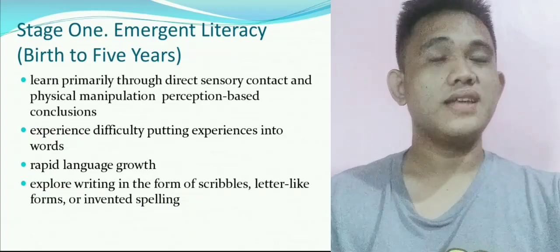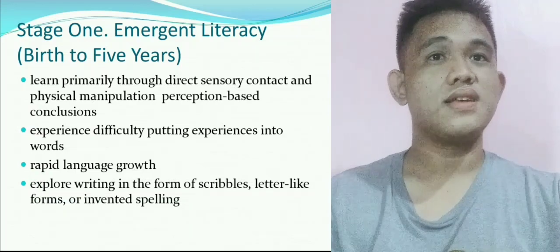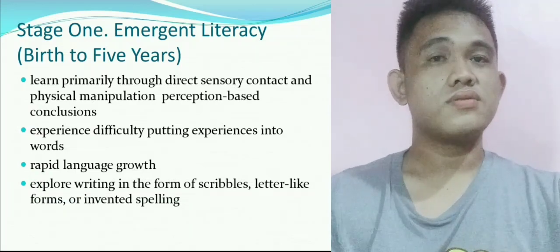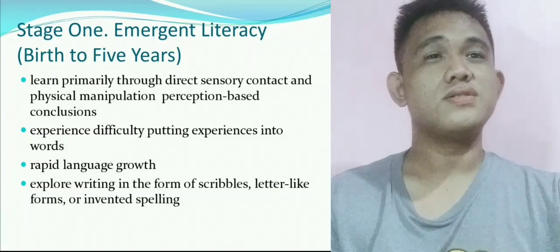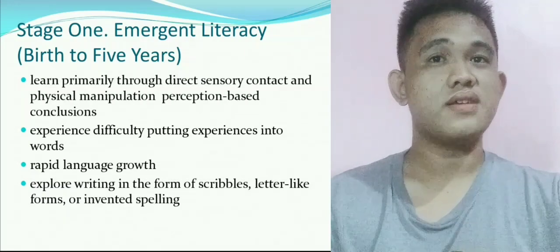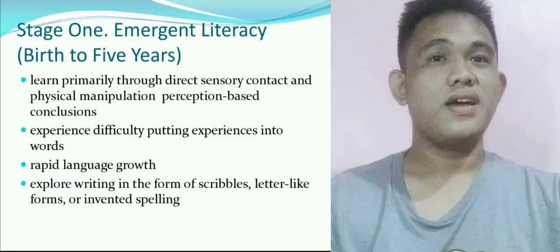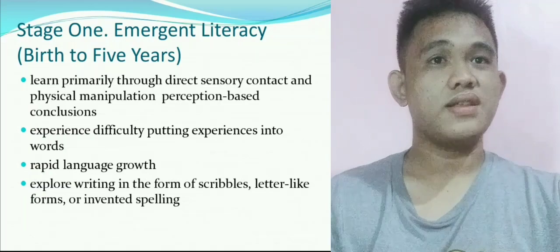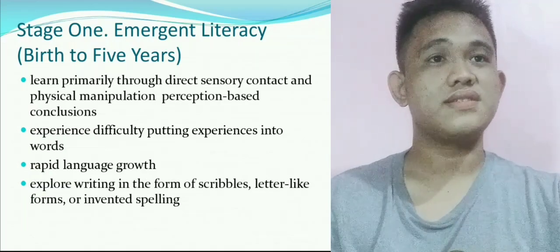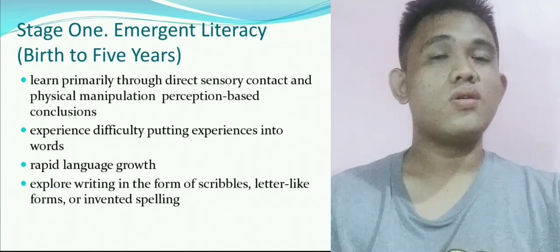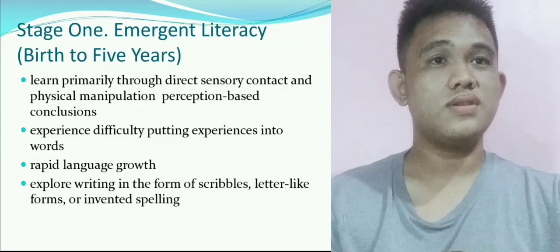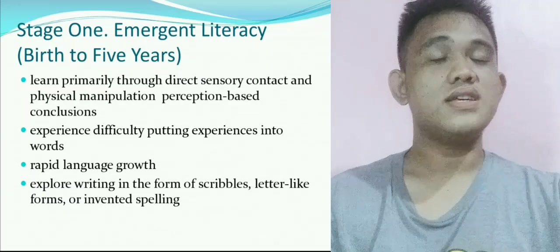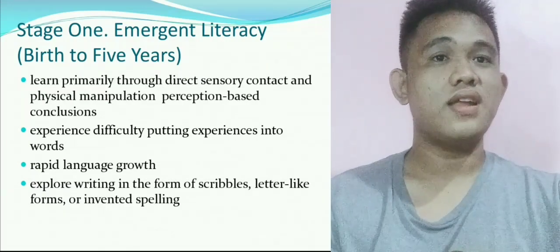Next is exploring writing in the form of scribbles, letter-like forms, or invented spelling. To scribble is to write something quickly and sloppily. Scribbling resembles writing — the child holds and uses pencils like an adult. Practice helping children write letters, because if they know how to read and write letters, it will be easy for them to improve their language skills.